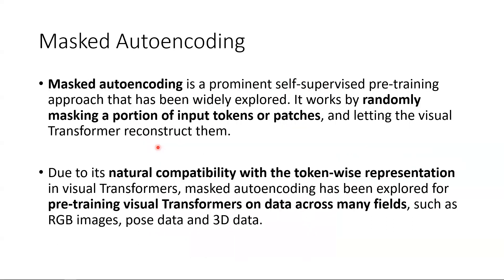First, we briefly introduce masked auto-encoding. Masked auto-encoding is a prominent self-supervised pre-training approach that has been widely explored. It works by randomly masking a portion of input tokens or patches and letting the visual transformer reconstruct them. Due to its natural compatibility with the token-wise representation in visual transformers, masked auto-encoding has been explored for pre-training on data across many fields, such as RGB images, pose data, and 3D data.